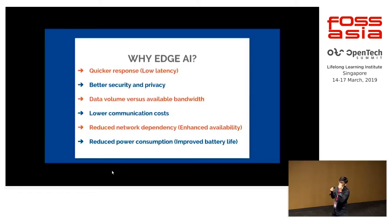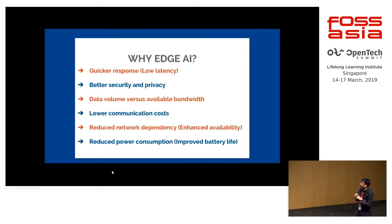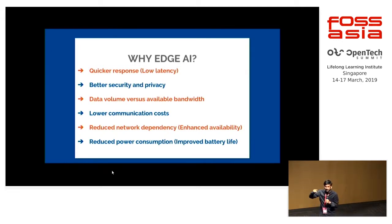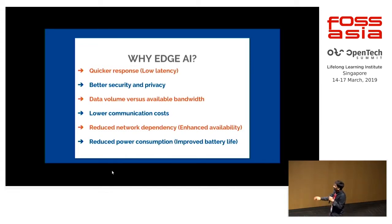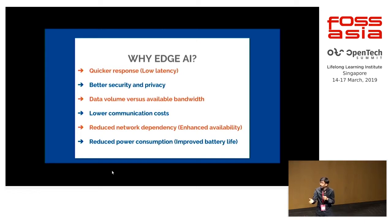Why Edge AI? Quicker response — you have everything central on the node, so latency is less. You have better security and privacy with everything in the network. You have lesser bandwidth requirements because you have less data to send — you only send important stuff to the cloud or central node. Less communication cost, reduced dependency on the network, and reduced power consumption.